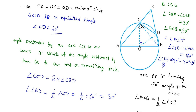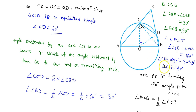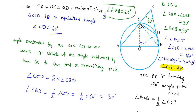So angle CEB equals 180 degrees minus 30 degrees minus 90 degrees, which gives angle CEB equals 60 degrees. Therefore angle AEB is also 60 degrees, and this is our final answer.